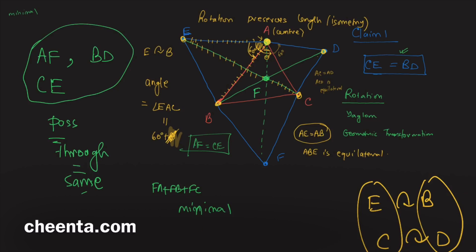Then we will use an extended version of Ptolemy's theorem to show that FA plus FB plus FC is minimal — meaning that if you pick any other point F′, then F′A plus F′B plus F′C will be larger than FA plus FB plus FC for this choice of F. It's a very interesting journey. You can try it and send it to me by email at support@chinda.com — the link in the description has the previous video and more beautiful mathematics.